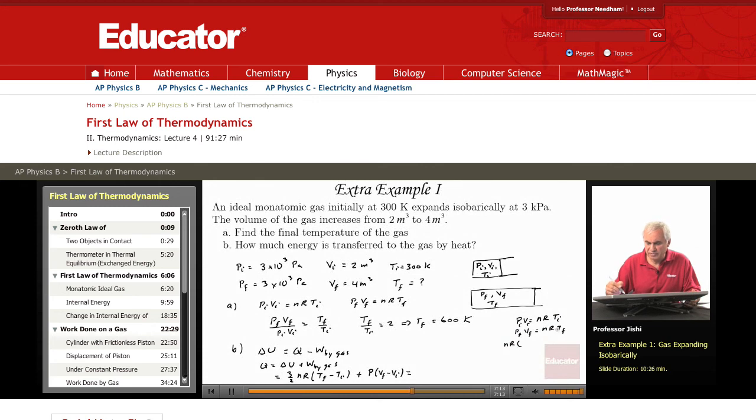So what is nR times TF minus TI? If I subtract, it is PF VF minus PI VI. But PF and PI are the same, so it is just P times VF minus VI, just like this one times 3 over 2.